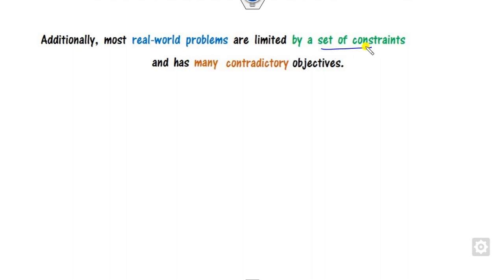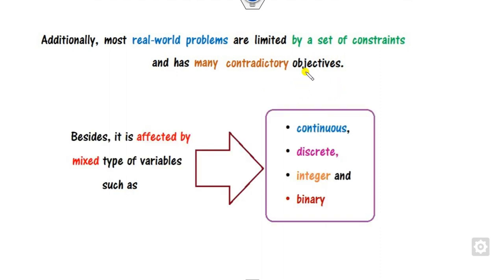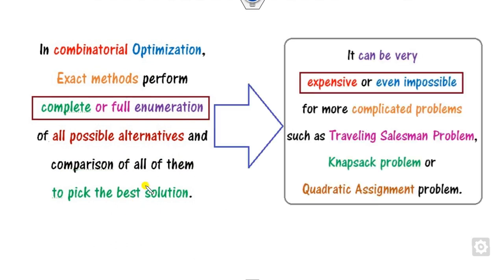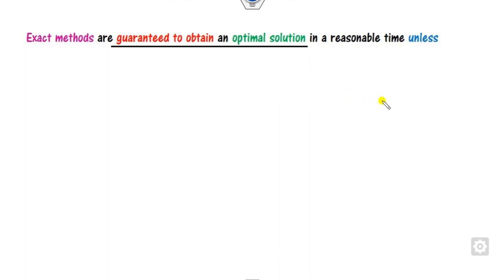There are many sets of constraints and many contradictory objectives. For example, you may have to maximize one function F while at the same time minimize function G — those are contradictory objectives. Apart from this, the exact method may also suffer deficiency because the problem may have continuous, discrete, binary, or integer variables in the same mathematical model. There is a need for full enumeration, which is not possible when N is very large for real-life problems like the traveling salesman or quadratic assignment problems.